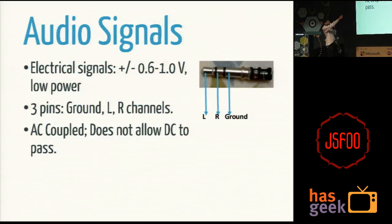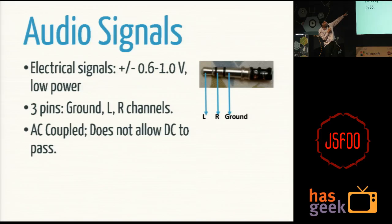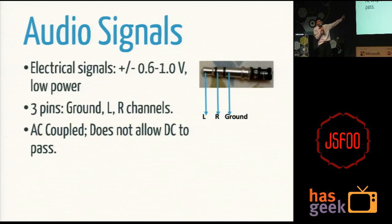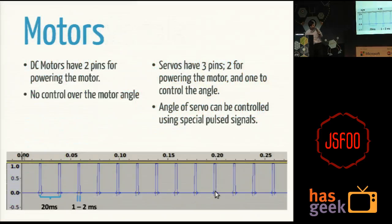The audio signals — the 3.5mm jack. If you've ever used headphones, you can cut it open and you'll have a stereo jack with a ground (the biggest one) and two pins for the left and right channels. The electrical signals are low — about 0.6 volts on a mobile phone and about 1 volt amplitude on a computer — and they have very low power, so it's technically impossible to power a motor using this. They are also AC coupled. If you've used a high pass filter, it does something similar: anything that is somewhat constant gets eliminated. So the servo's constant-period pulse signal will be eliminated when passed through the audio jack — it's a practical limitation.